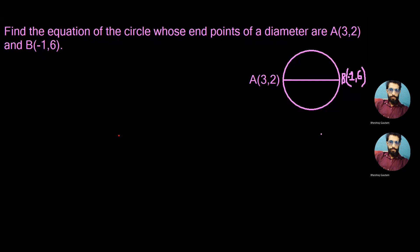In the given question two endpoints A(3,2) and B(-1,6) of a diameter of a circle are given, and we are supposed to find the equation of this circle.